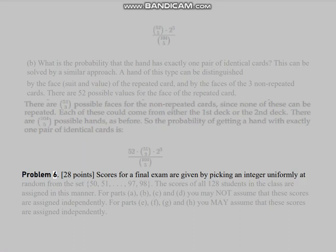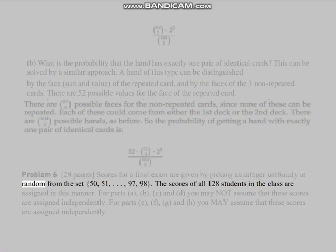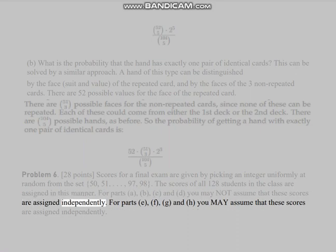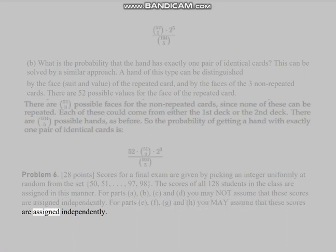Problem 6 (28 points): Scores for a final exam are given by picking an integer uniformly at random from the set {50, 51, ..., 97, 98}. The scores of all 128 students in the class are assigned in this manner. For parts (a), (b), (c), and (d) you may NOT assume that these scores are assigned independently. For parts (e), (f), (g), and (h) you MAY assume that these scores are assigned independently.